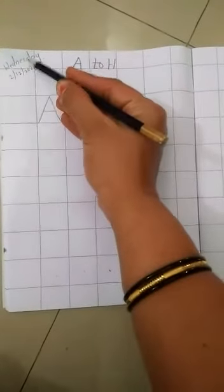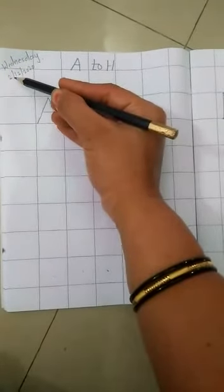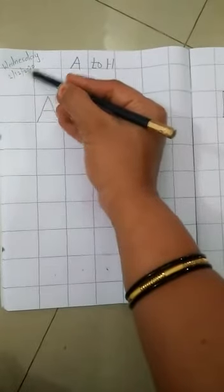Today is day Wednesday. Today is day 2 December 2020. Practice letter A to H.